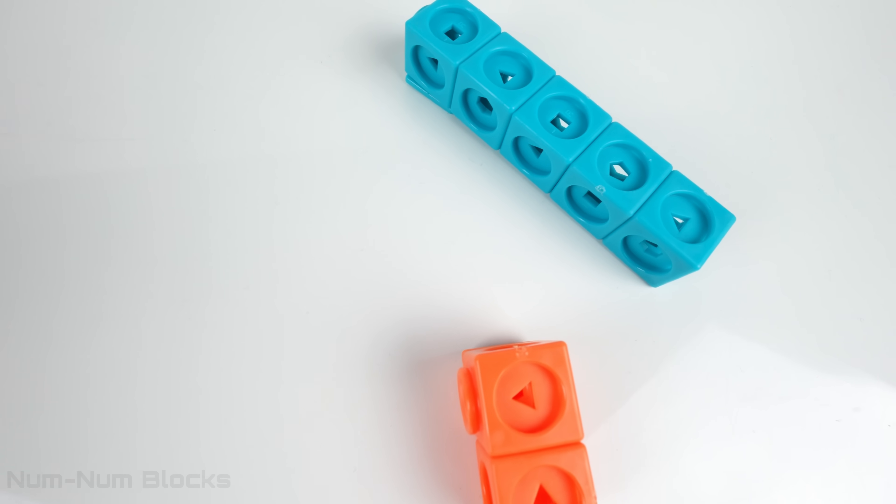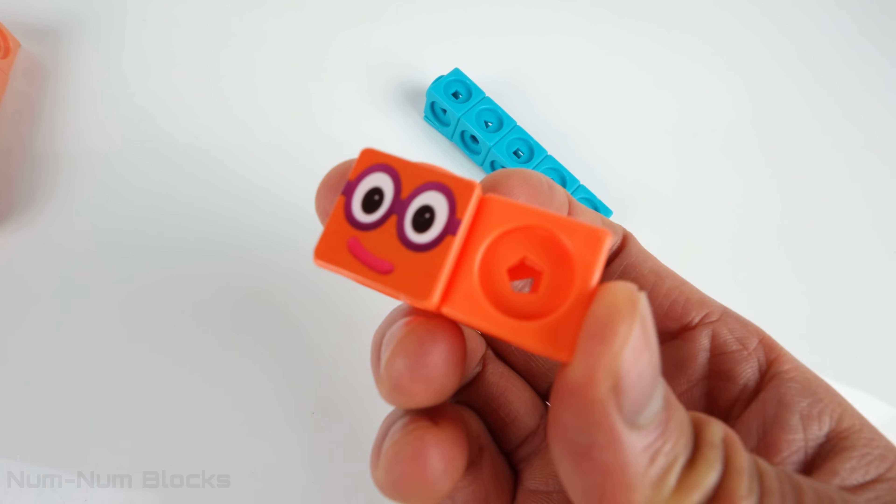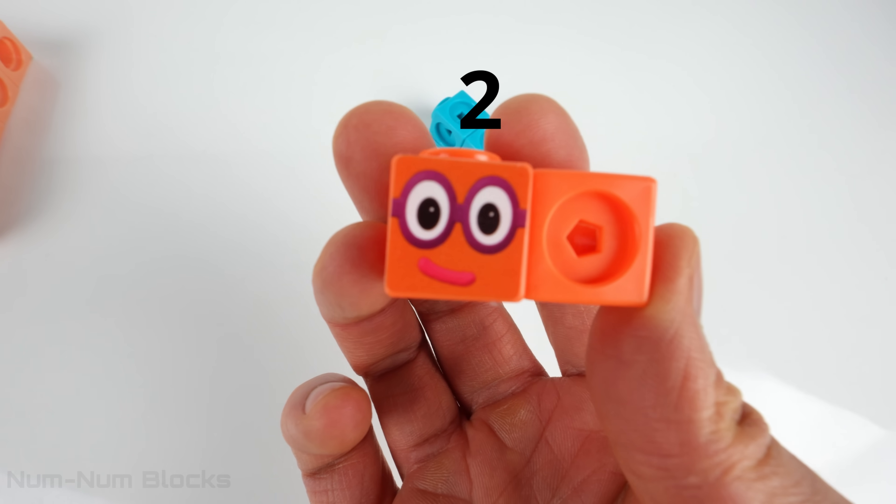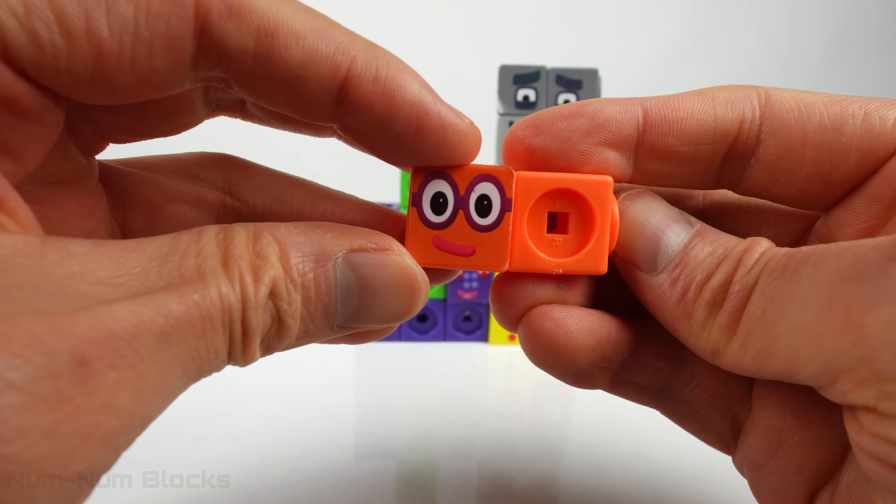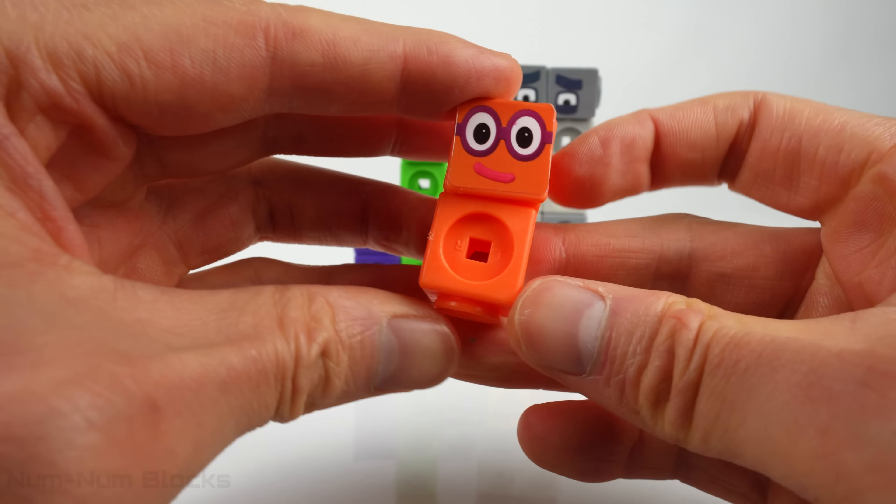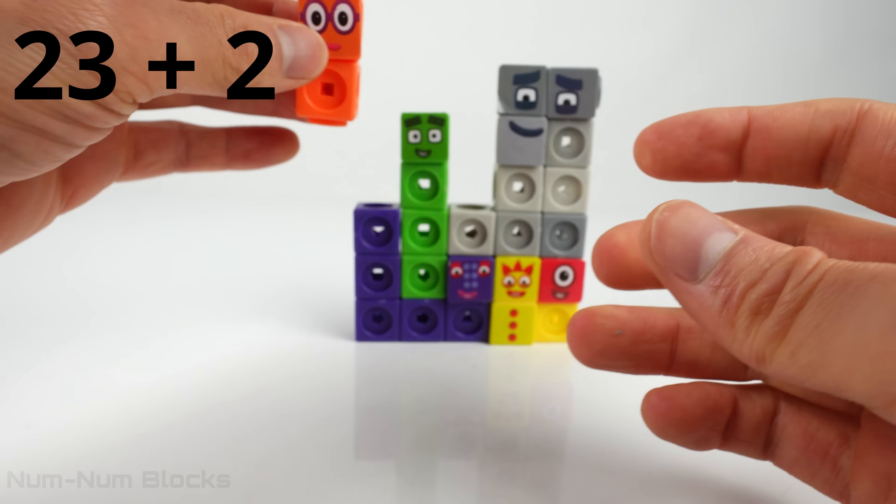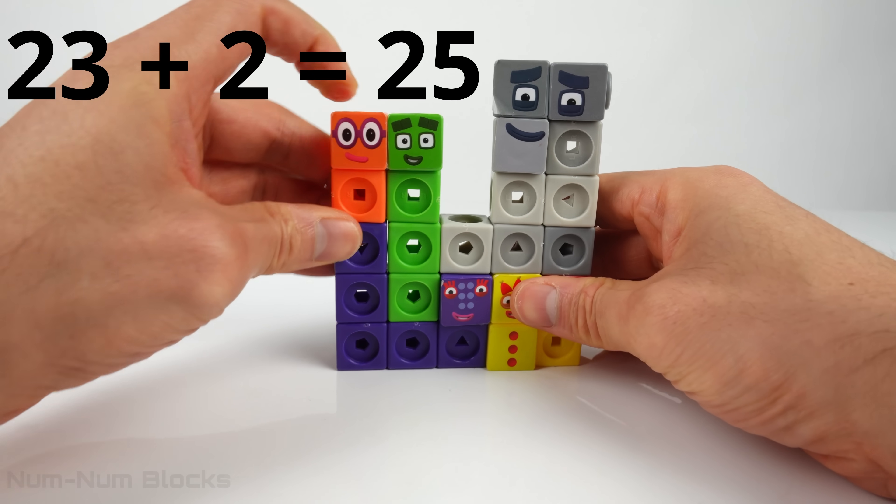The next number block is this orange one. 2! How do you do? Let's rotate 2's face. When we add 2 to 23, we get 25!